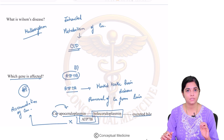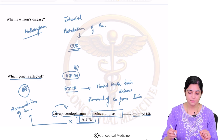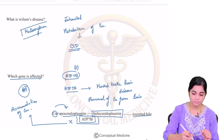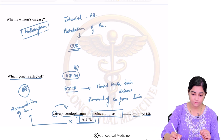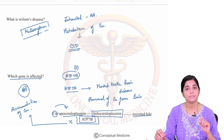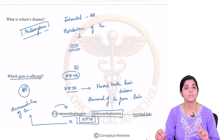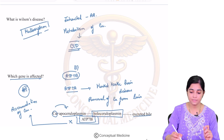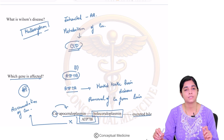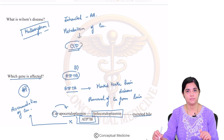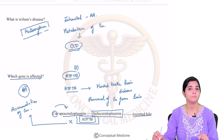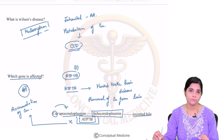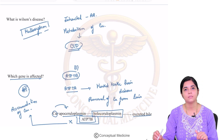So what have we understood till now? Wilson's disease is a multi-system disorder, inherited in an autosomal recessive fashion. There is a defect in the metabolism of copper, finally resulting in accumulation of copper and chronic liver disease. The gene affected is ATP-7B, so there is no formation of holoceruloplasmin and no removal of copper in the bile.